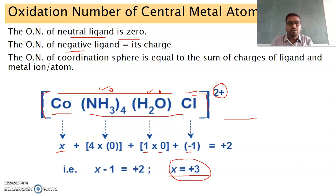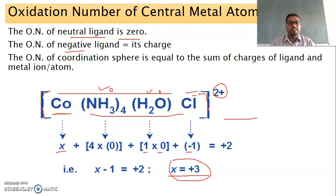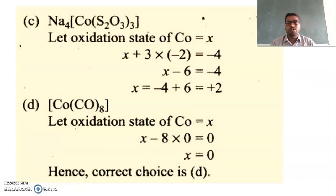To calculate the oxidation number of the central metal ion in any coordination complex: take the oxidation number of the central metal ion as x, then take the number of each type of ligand and multiply by its charge, sum all terms, set equal to the charge of the coordination complex, and solve for x.